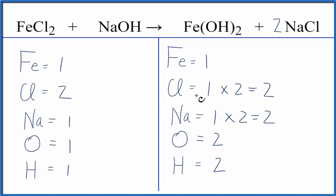Let's fix the Na's. We put a coefficient of 2 here. This 2 applies to everything. We have 1 times 2, so we have 2 Na's. 1 times 2 for the oxygen, we have 2 of those. And then 1 times 2 for the hydrogen, we have 2 of those.